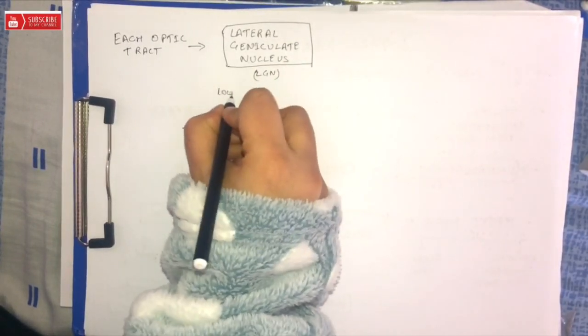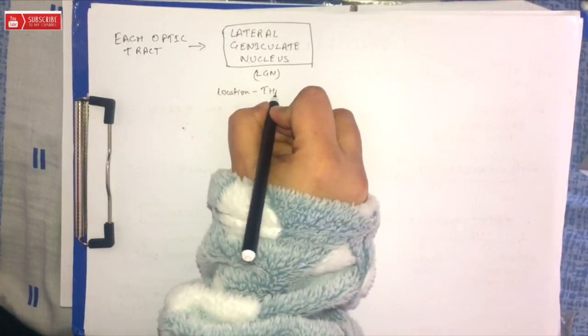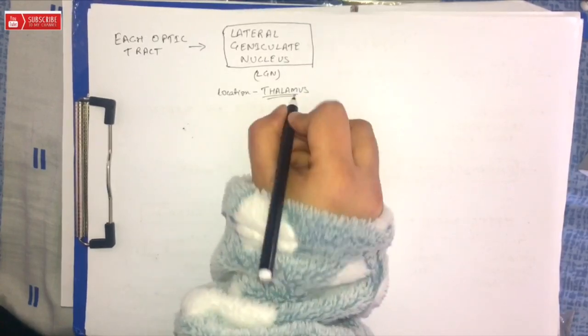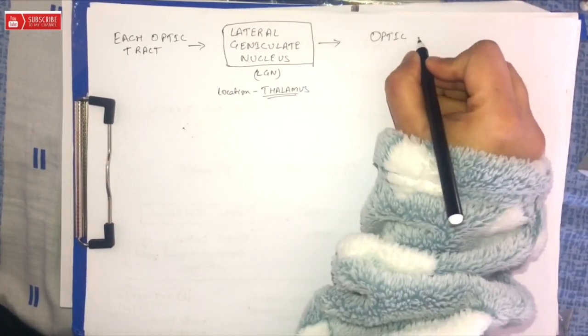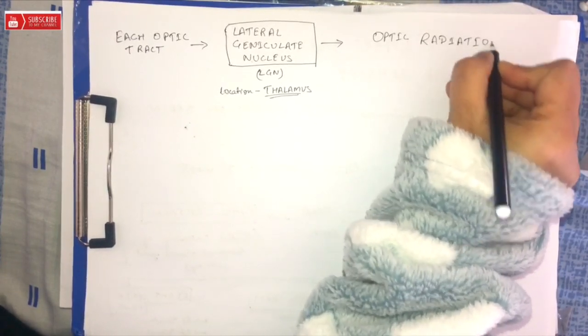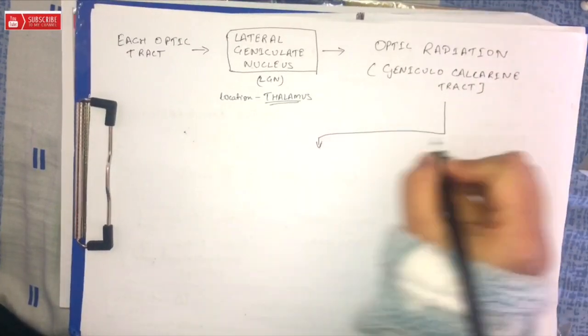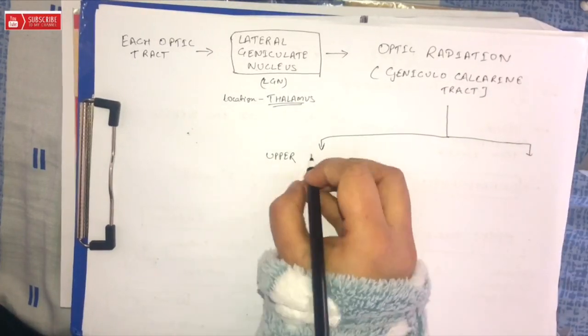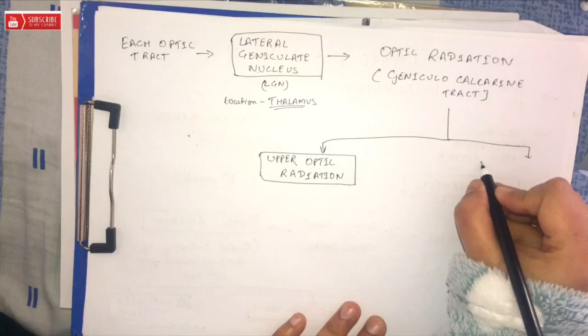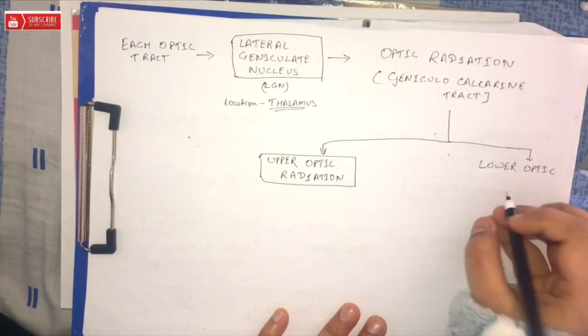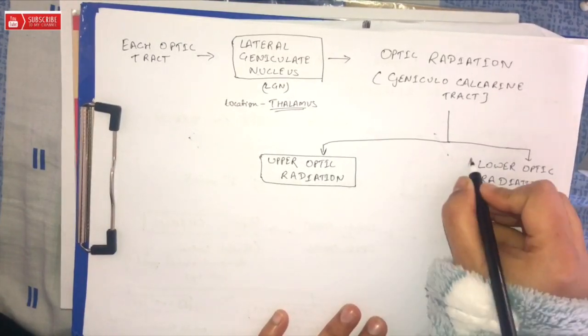Axons from the lateral geniculate nucleus then carry visual information via a pathway known as optic radiation. This pathway itself can be divided into two: upper optic radiation and lower optic radiation. Upper optic radiation carries fibers from the superior retinal quadrants.